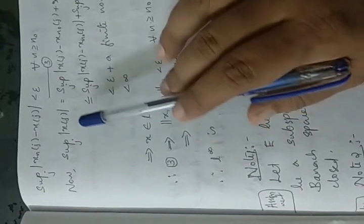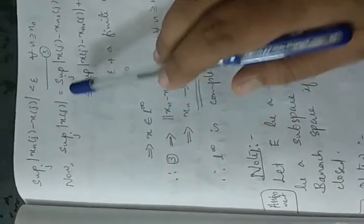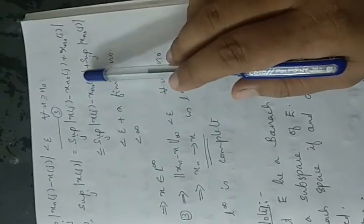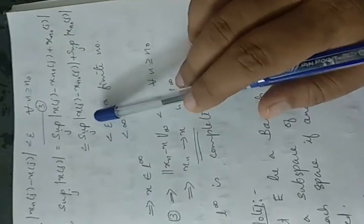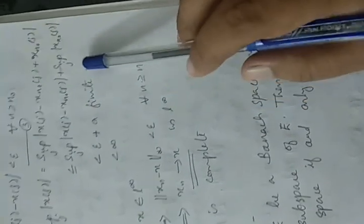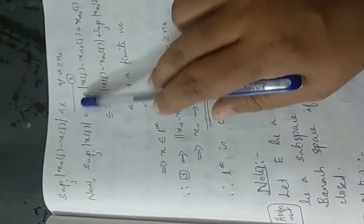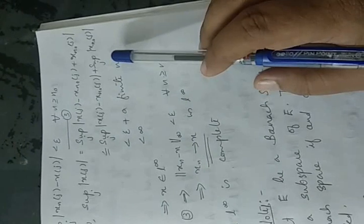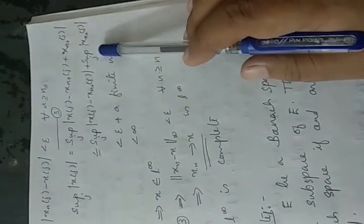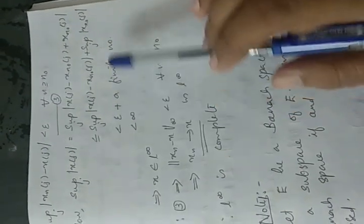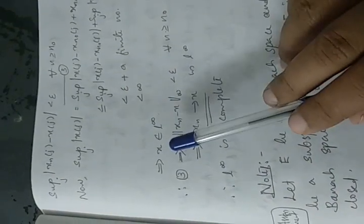Now we have to prove X belongs to L∞, that is, the supremum of |X(j)| is finite. We consider the supremum of |X(j)| = supremum of |X(j) − Xn₀(j) + Xn₀(j)|. Splitting the modulus and applying the supremum, this is less than or equal to the supremum of |X(j) − Xn₀(j)| plus the supremum of |Xn₀(j)|. The first term is less than ε by the inequality above, and the second term is finite since Xn₀ is an element of L∞. So we get ε plus a finite number, which is again finite. By definition, X belongs to L∞.